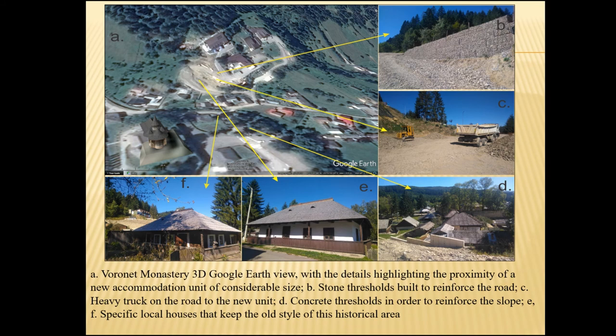This is the Voronets Monastery, showing the anthropogenic interventions around it — houses that fit the landscape and things that don't fit at all.